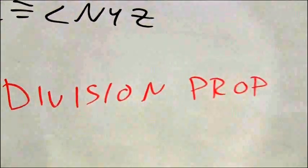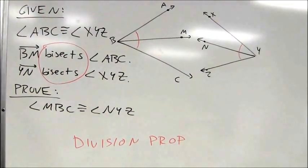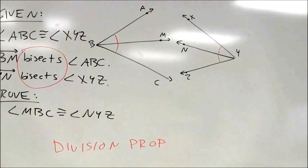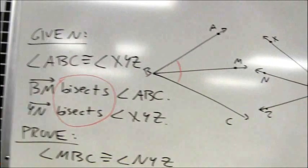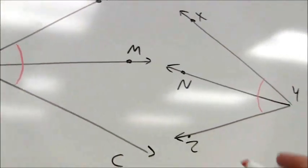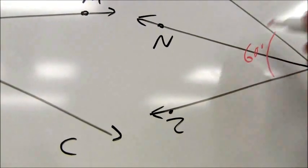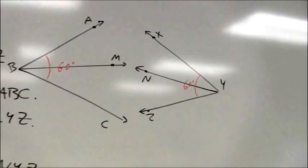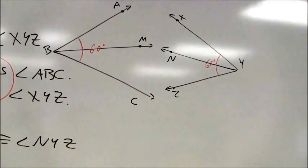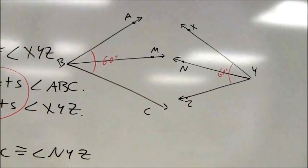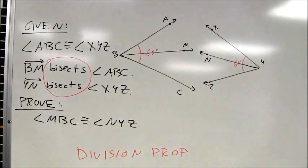I have two things that are both being cut in half. And so if I have two equal things and they're both being cut in half, I'm dividing those things by two. As a result, this is going to end up being the division property. In other words, if two wholes are equal to each other, the halves are going to be equal to each other. If you're uncomfortable with this, you can also try it with numbers — say both angles are 60 degrees and both are bisected. You'd divide both by two to get the final measures. In the end, this is an example of the division property.